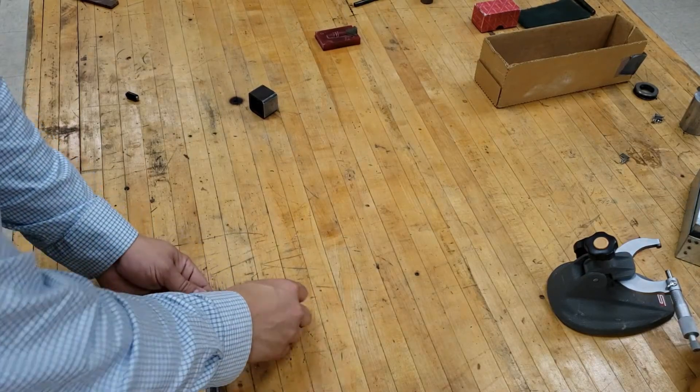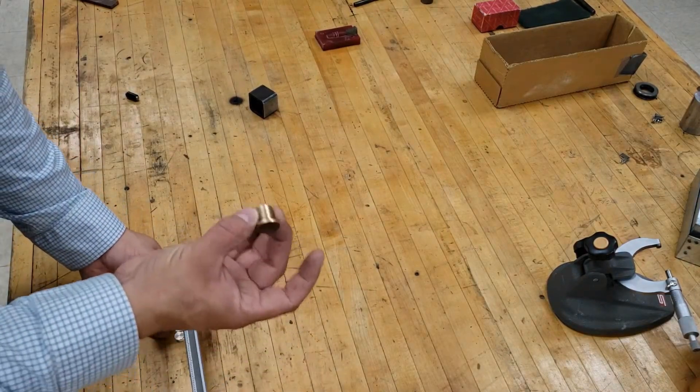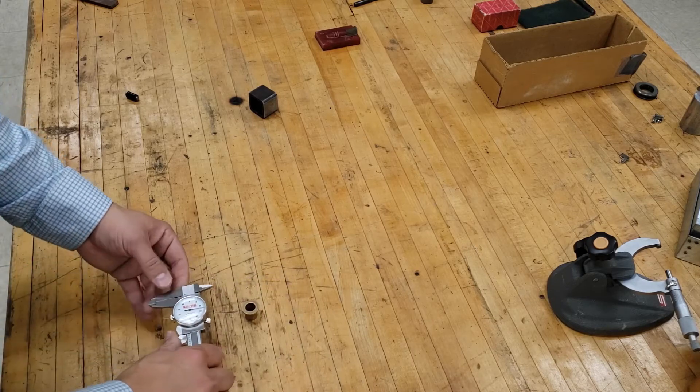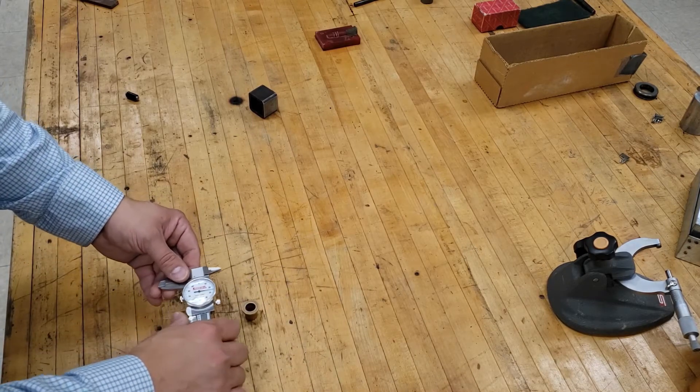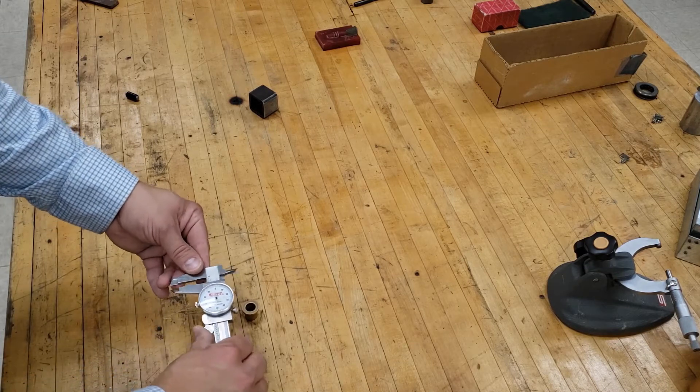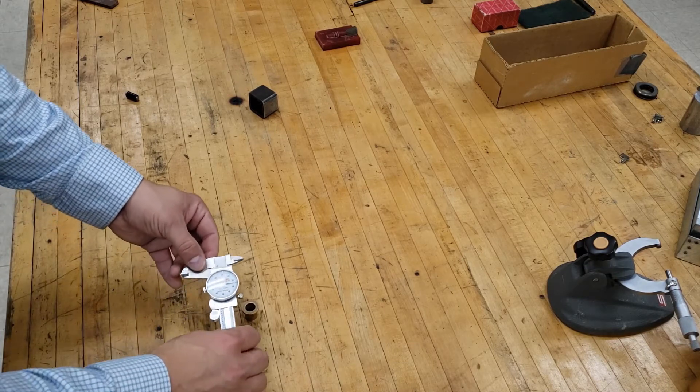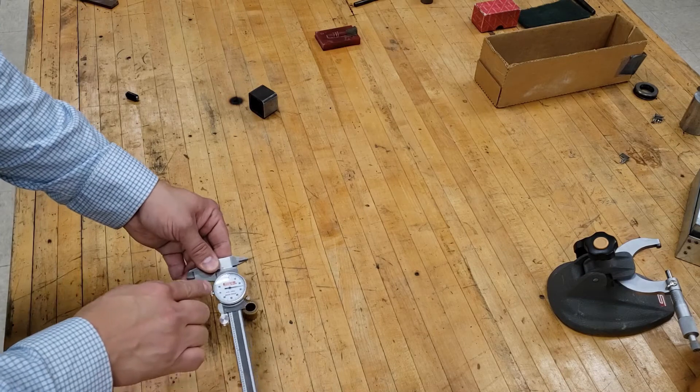At this measurement station, you will be measuring this bronze bushing using a dial caliper. First, you want to make sure that the dial caliper zeroes out. In this case, this one does not.